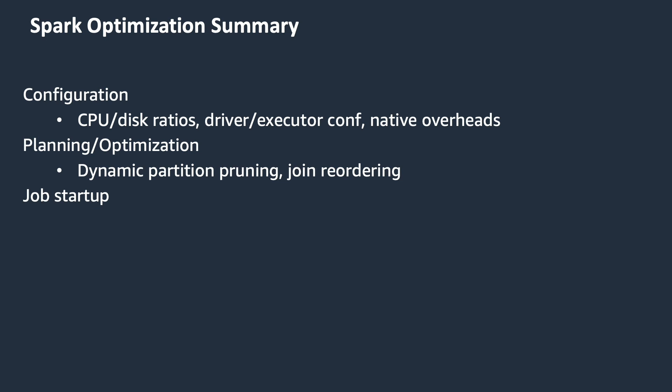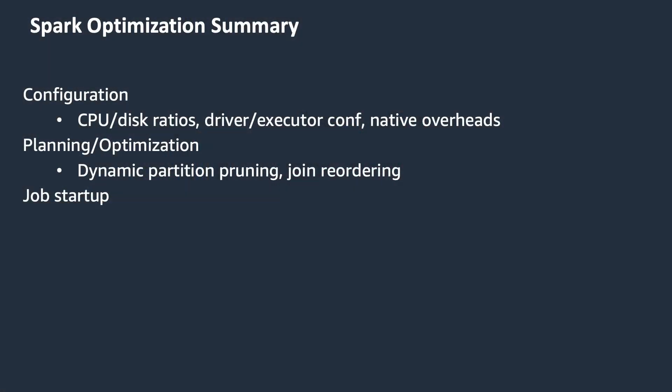It also avoids issues that can occur with Amazon S3 eventual consistency during job and task commit phases and helps improve job correctness under task failure conditions. Another feature customers can take advantage of when moving Spark applications to EMR is the S3 Select API. This API allows applications to retrieve only a subset of data from an object, pushing the computational work of filtering large data sets down from the cluster to the Amazon S3 service. In addition, leveraging the Glue Data Catalog for Metastore significantly improves cluster reliability by not having to maintain a separate Hive Metastore on an external database.